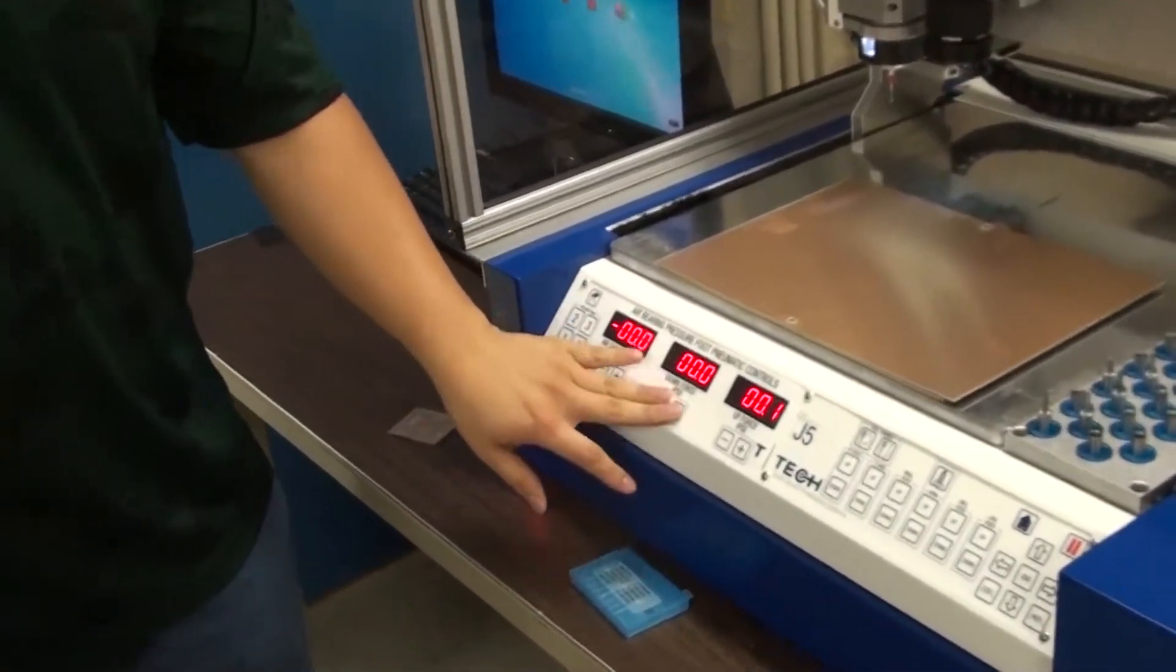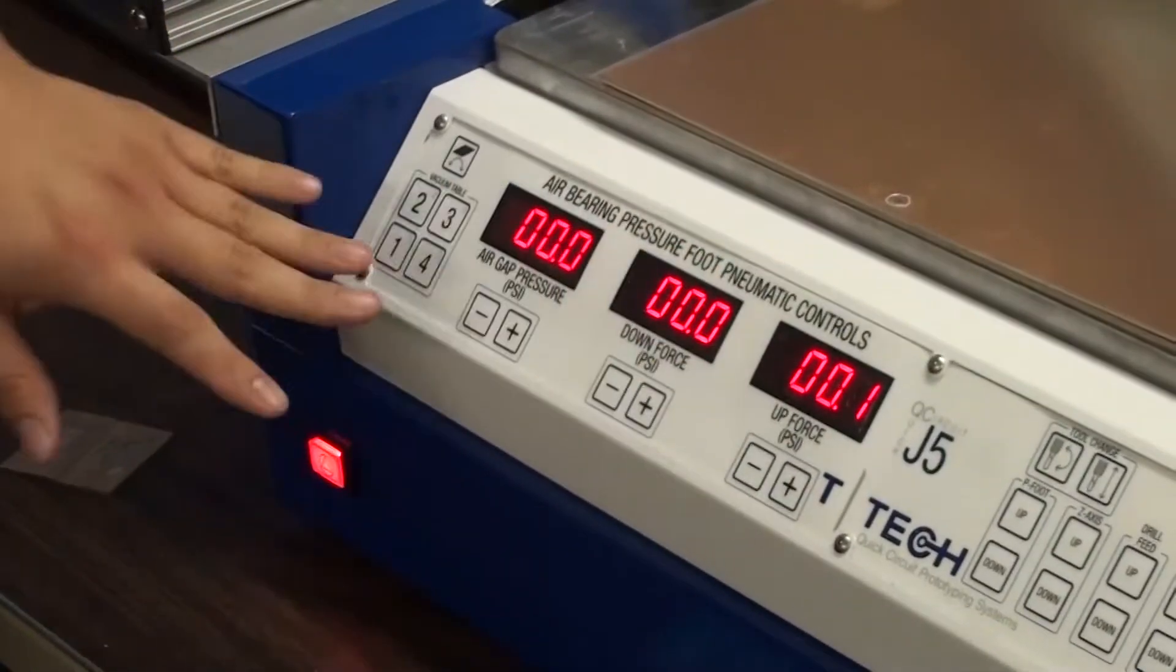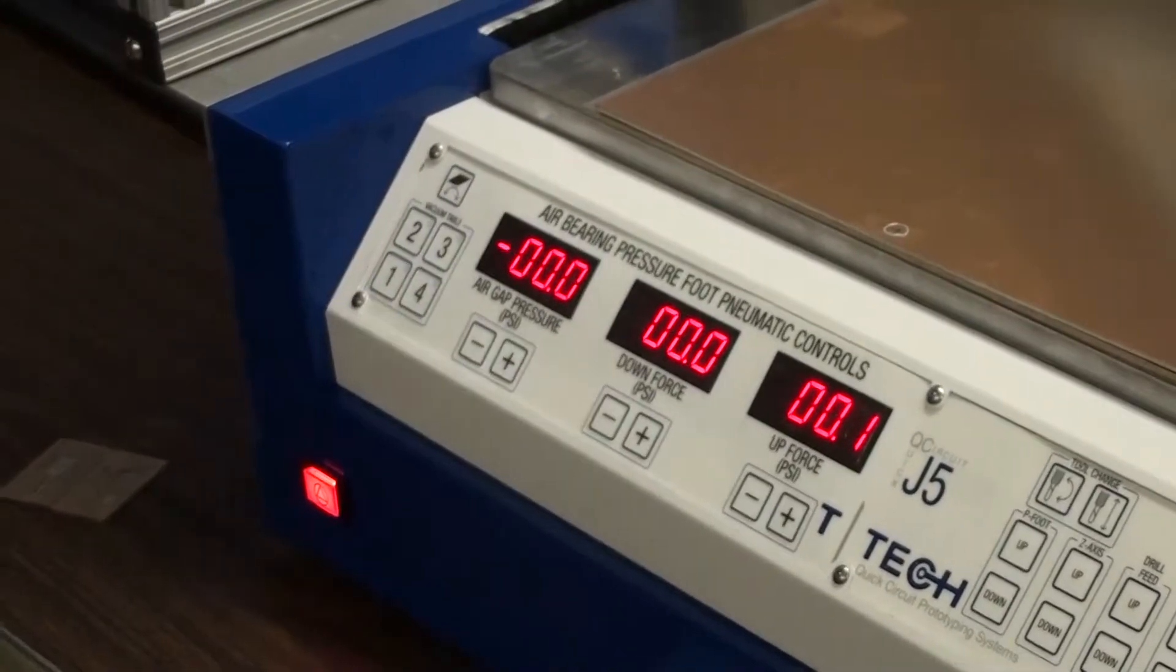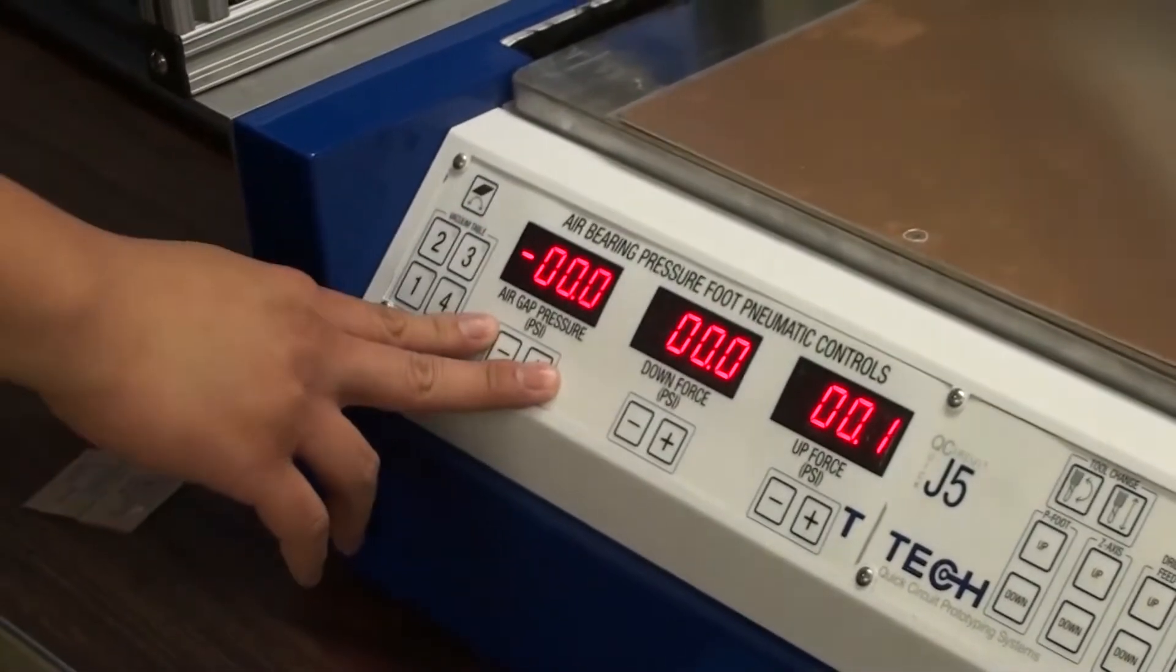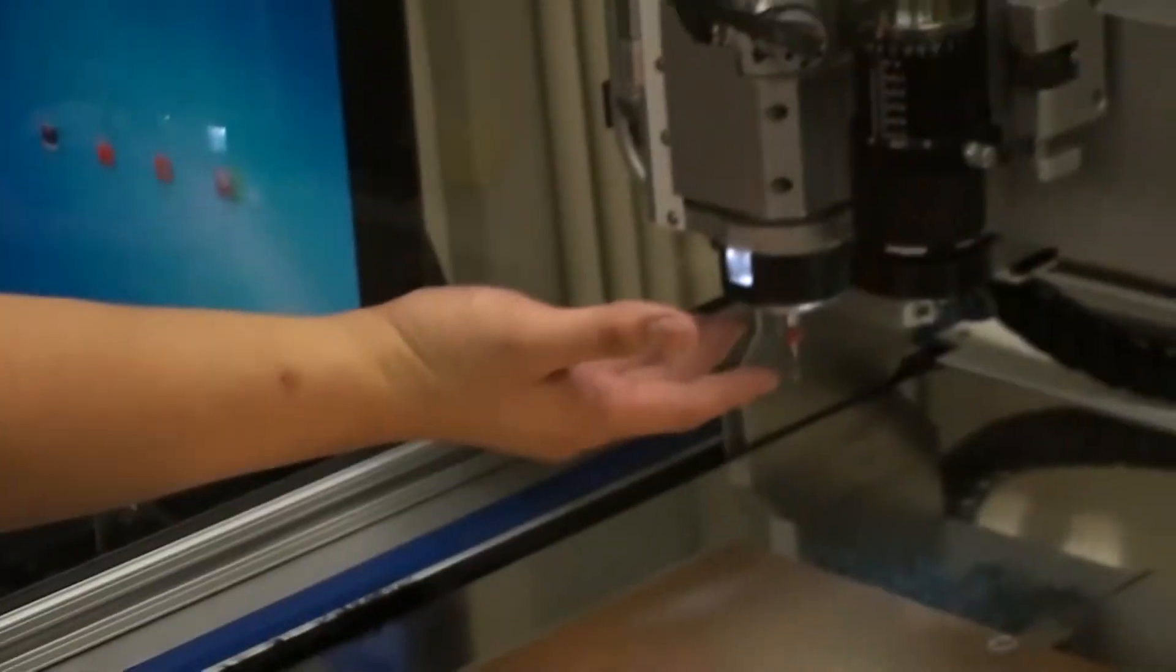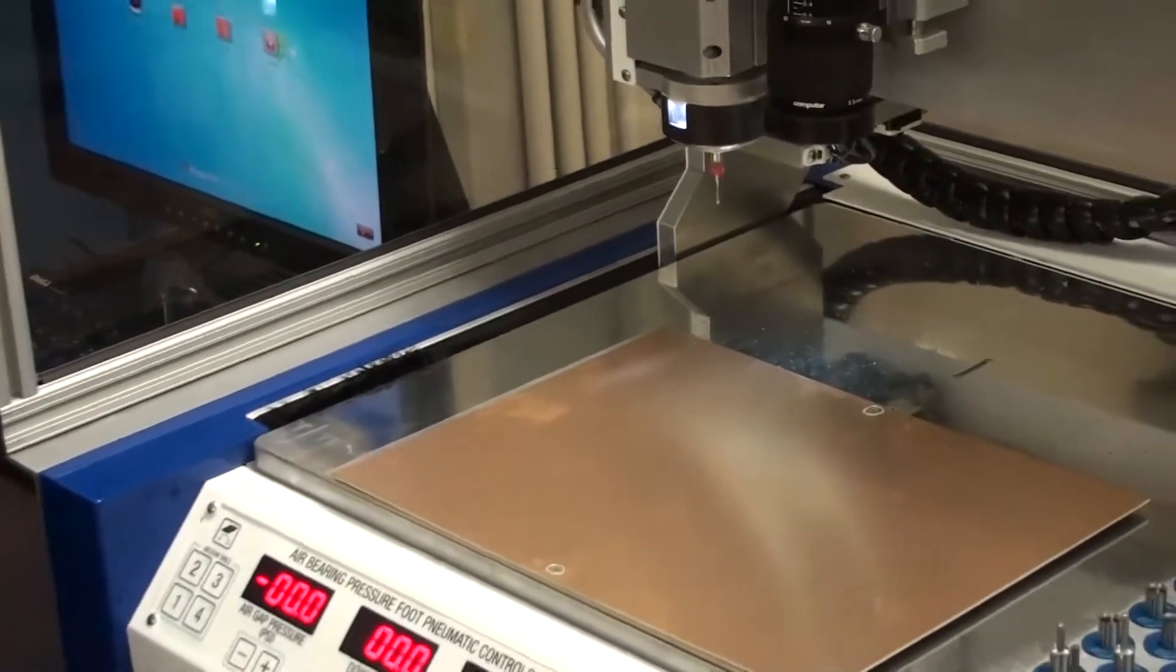Right now we have three different air pressure settings. That's different for different parts of the machine than actually the actual tool head. So the first thing we have here is air gap pressure. This is how much pressure the air bearing pressure foot up here puts out in order to slightly hover above the board without touching it.